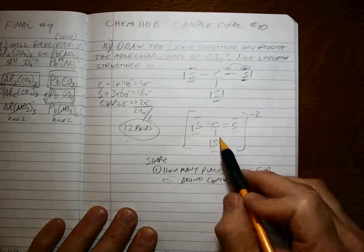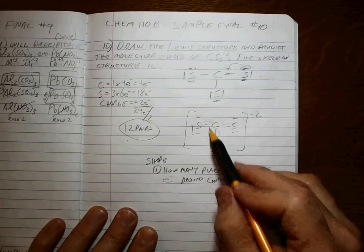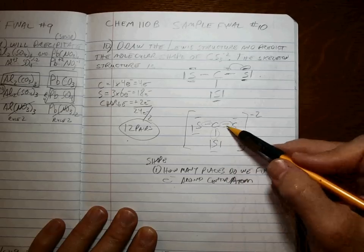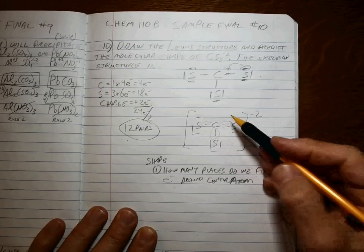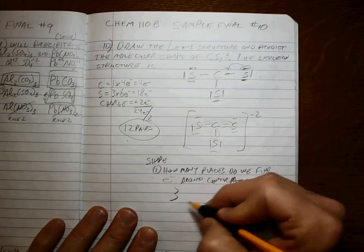Now remember, a single bond and a single bond are each one place, but a double bond is one place too. This is just a stronger magnet. So the answer is three places.